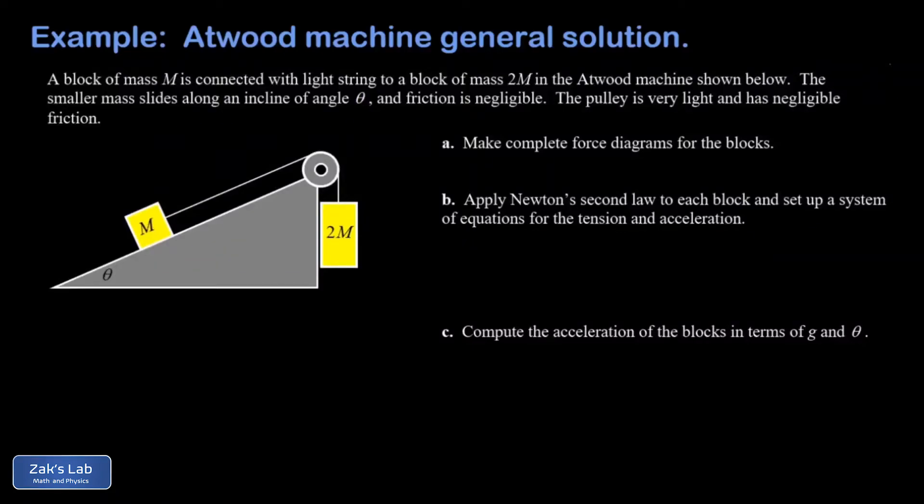In this problem, we're given a general sort of Atwood machine problem, so there's no numbers in this one. We just know that one of the masses is M, the other one is twice that, so that's 2M. And the angle of incline is just given by a general angle theta.